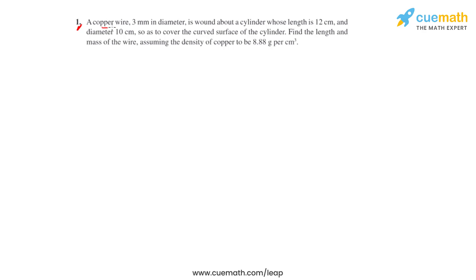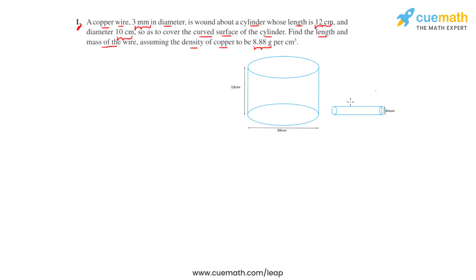Question number one says that a copper wire which is 3 millimeters in diameter is wound about a cylinder whose length is 12 centimeters and diameter is 10 centimeters, so as to cover the curved surface of the cylinder. We have to find the length and mass of the wire, assuming the density of copper to be 8.88 grams per centimeter cube. This is the cylinder whose curved surface area is to be covered with this wire.